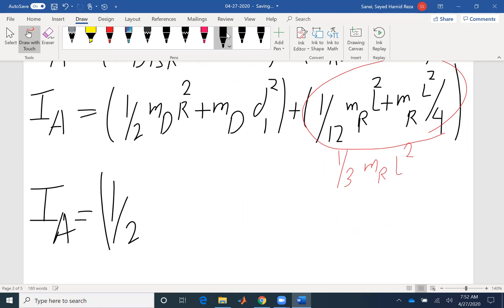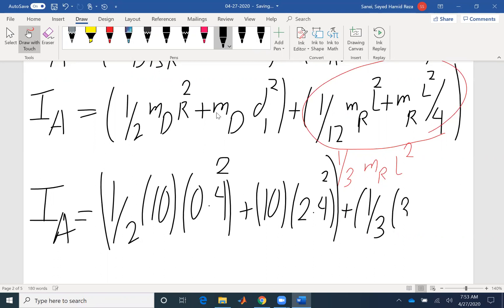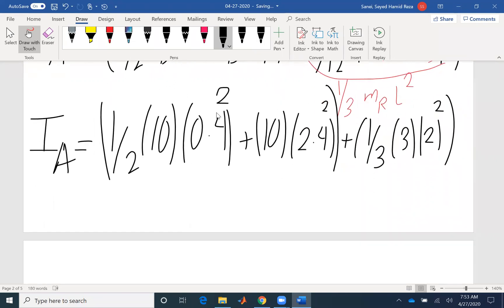I'm going to expand this and find Ia. Ia would be half of the mass of the disk is 10, the radius is 0.4. I need to use parallel axis theorem: 10 times 2.4 squared, that's the distance d1. I have a second component, which would be one third of the mass, which is 3, times the length, which is 2, squared. At the end, I find Ia, the mass moment of inertia, would be 62.4 kilogram meter squared.